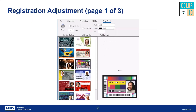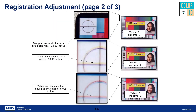Next is registration adjustment — how to account for alignment issues. First, you'll want to print a registration card through the driver's test printing feature to check your registration. You may see the yellow panel shifted slightly above the other two panels, or the magenta panel shifted up from the cyan line. We have new advanced settings in the printer driver to address this.